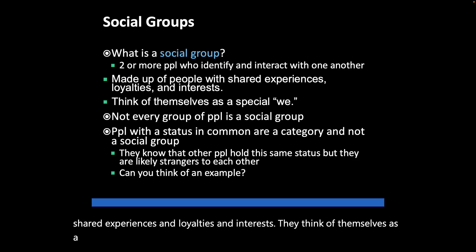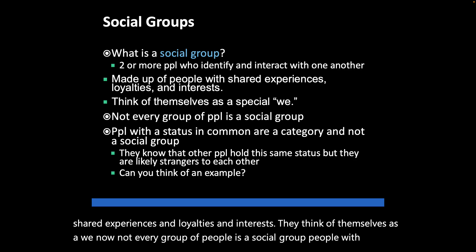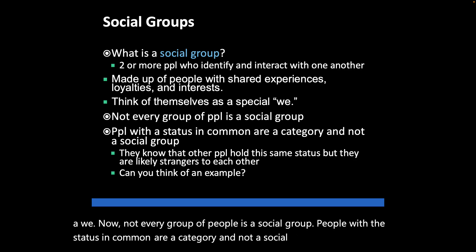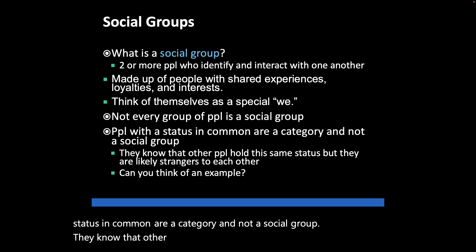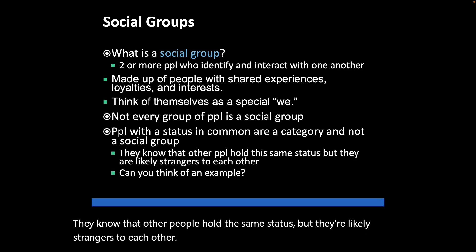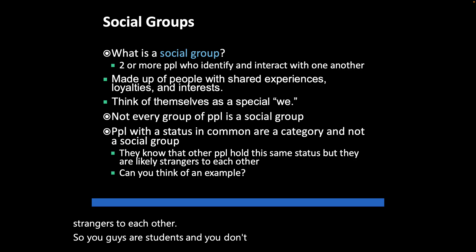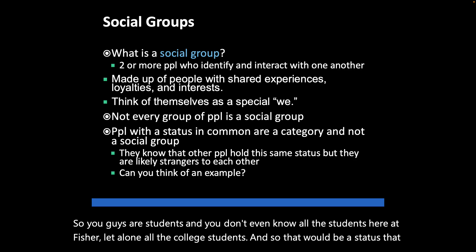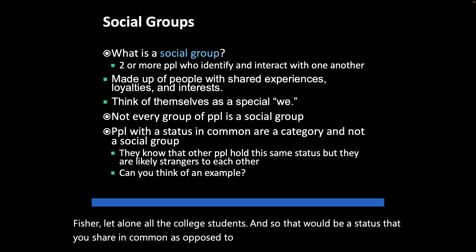Not every group of people is a social group. People with a status in common are a category, not a social group. They know that other people hold the same status, but they're likely strangers to each other. For example, you are all students, but you don't know all the students here at Fisher, let alone all college students. That is a status you share in common, as opposed to a social group.